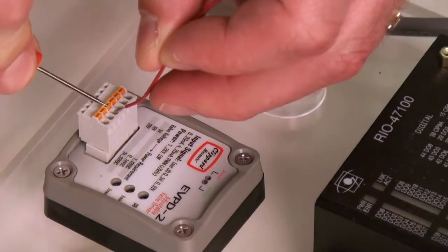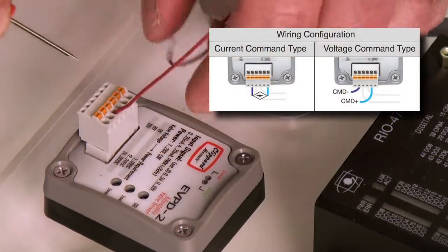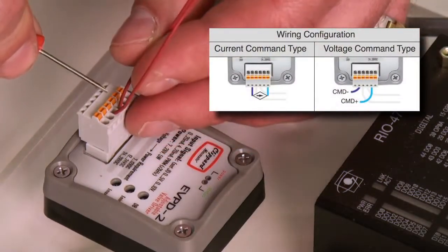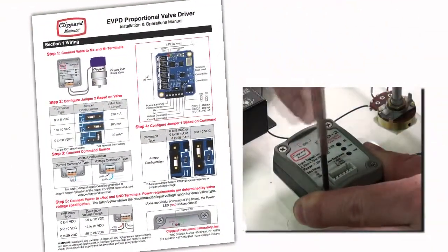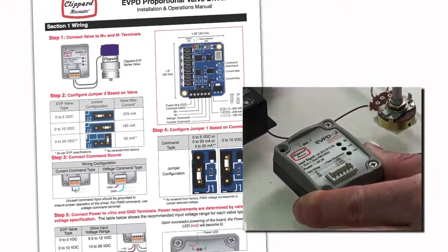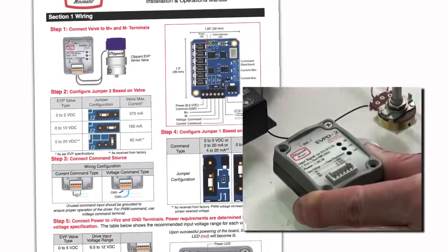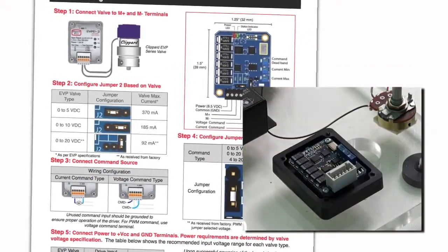So let's connect that valve up to the driver first. There's a wiring diagram on the TDS online. Now that we have the valve connected, let's make sure that the output current jumper is set properly for the valve you have connected. The factory setting for the jumper is 92 milliamp output for 0 to 20 volt valves. If you are using a different coil, change the jumper accordingly.